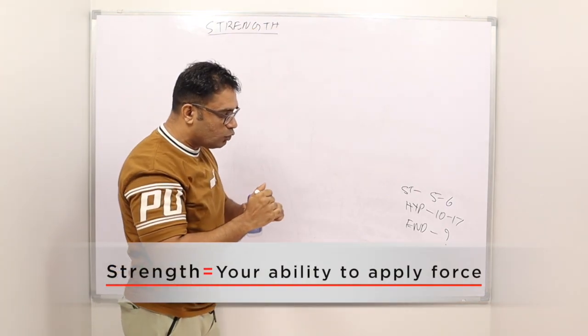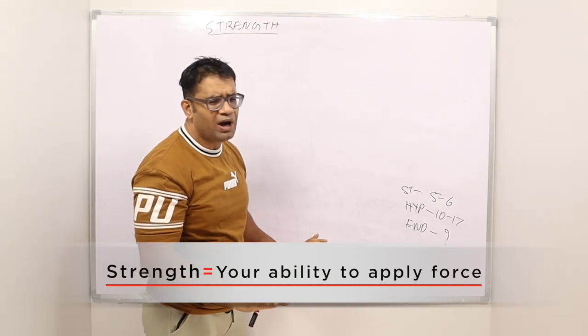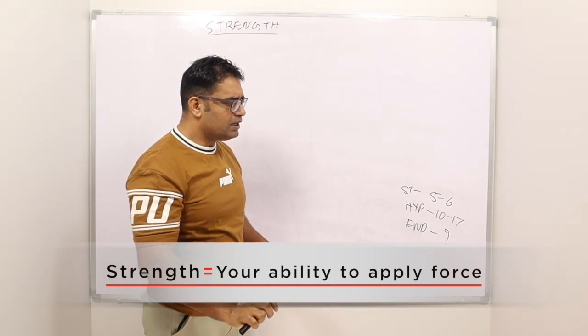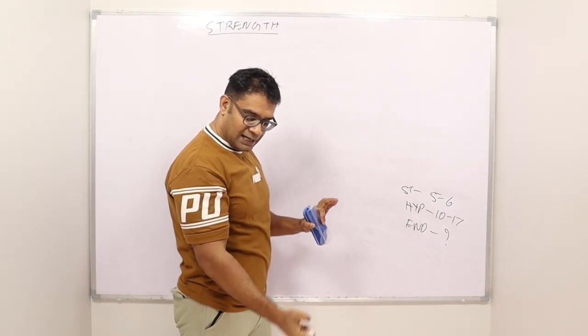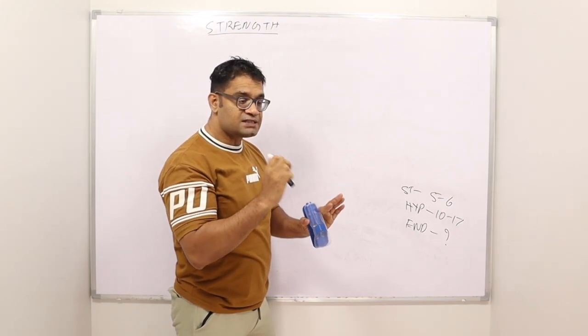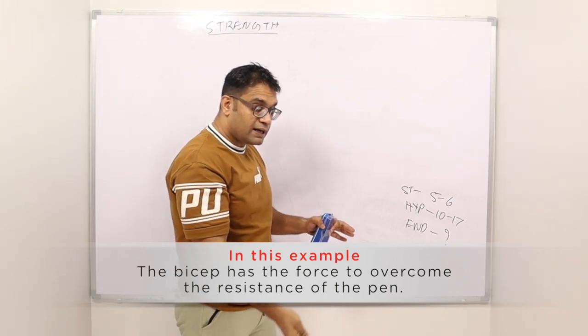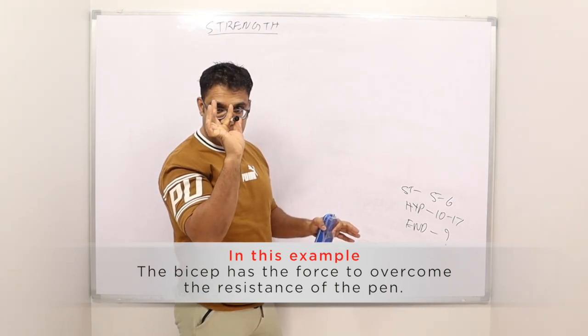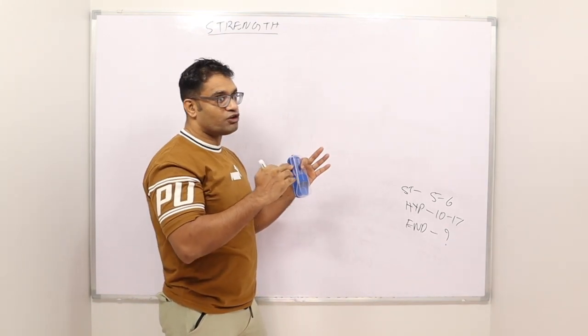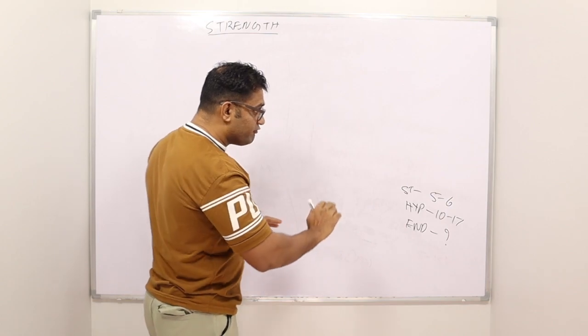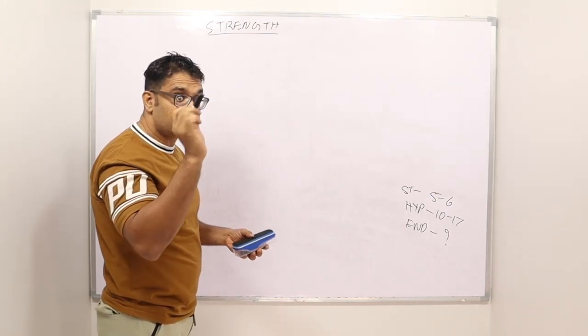Your ability to apply force. Simple one line definition - your ability to apply force. So if I have this pen in my hand and I do this, this means my biceps has the force to overcome this resistance that the pen applied, whatever the weight is. That is strength.